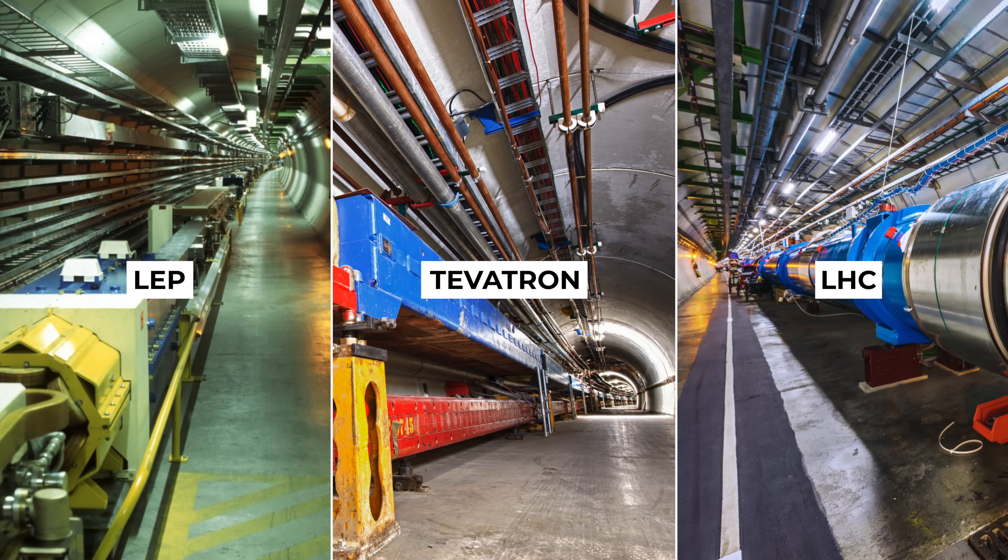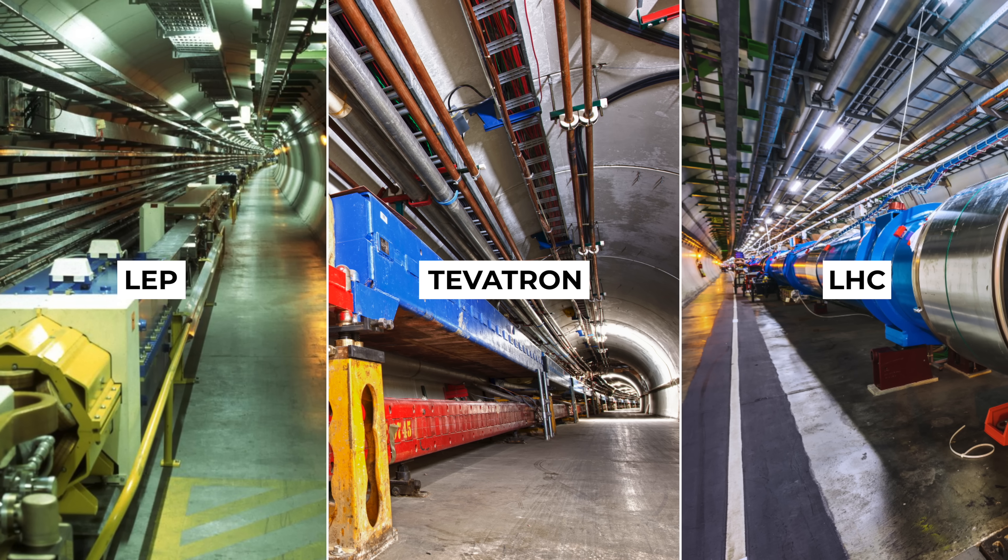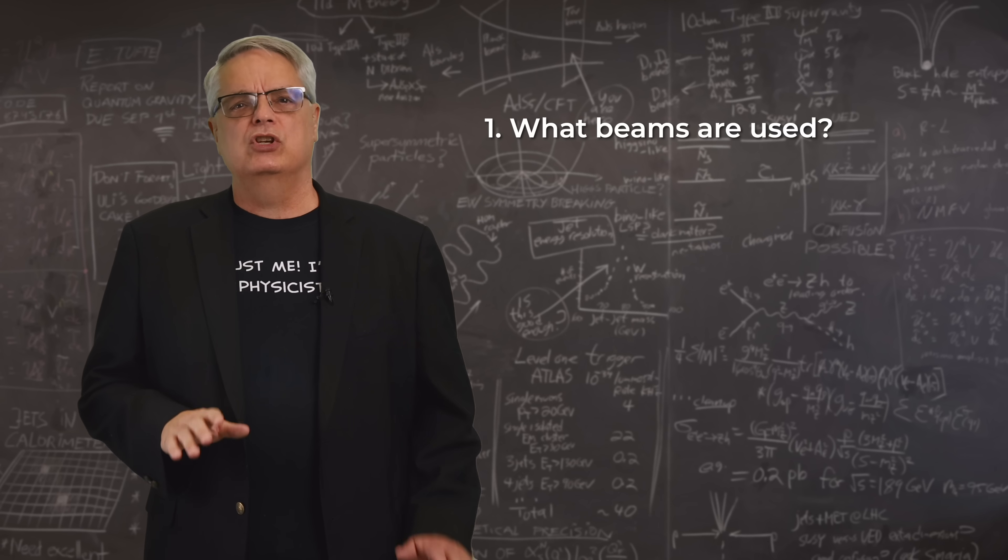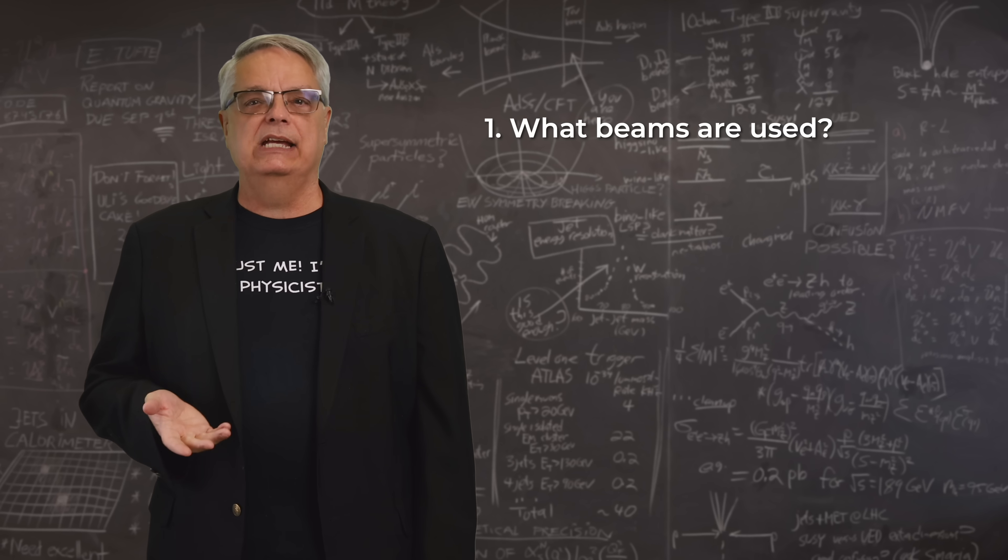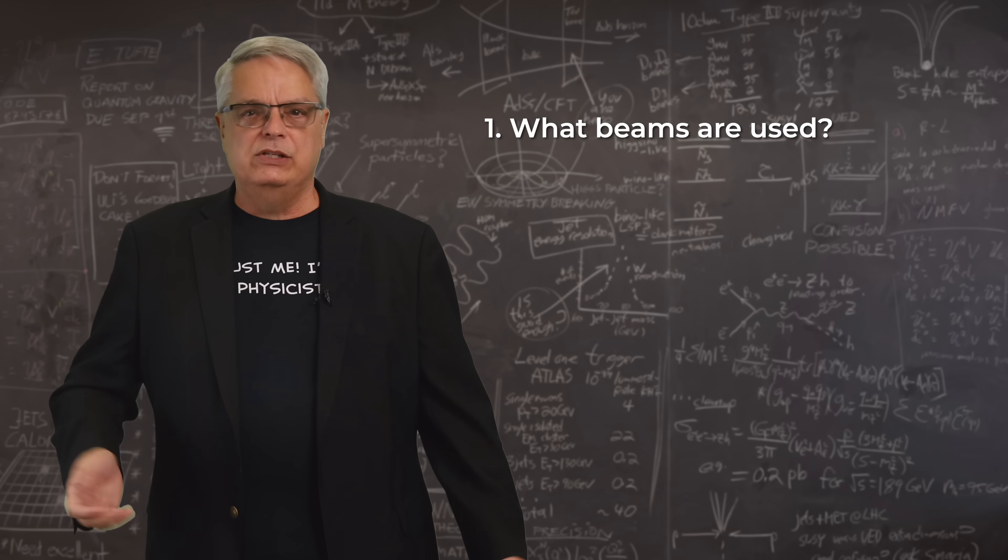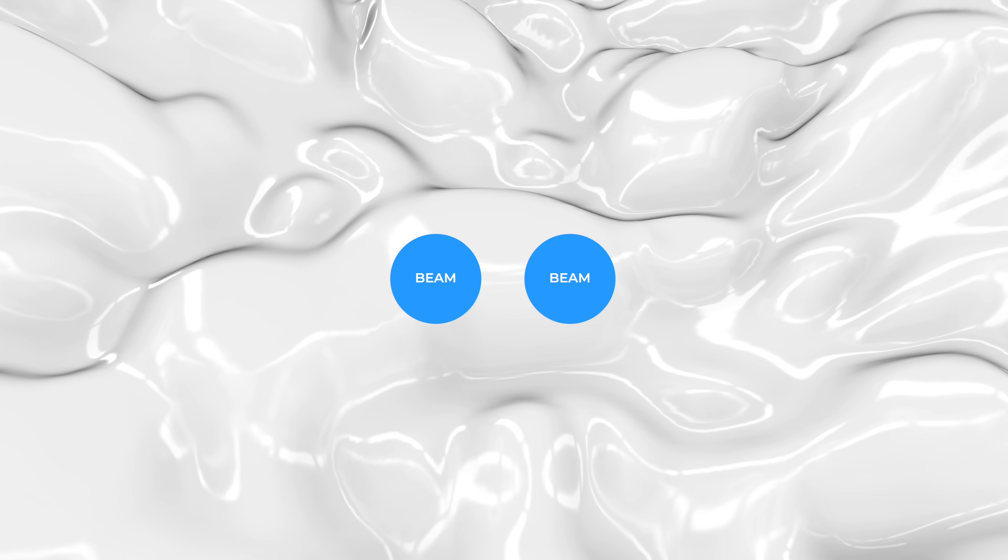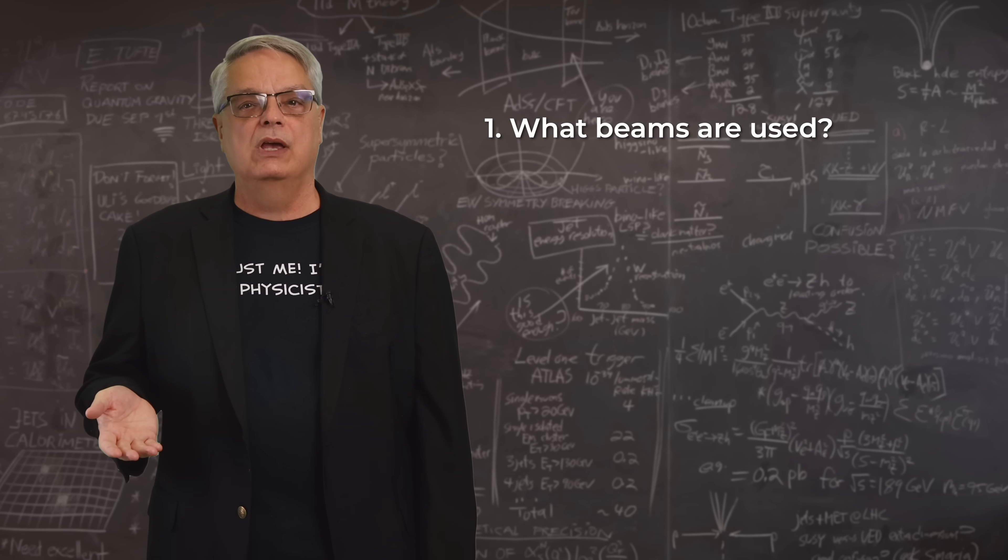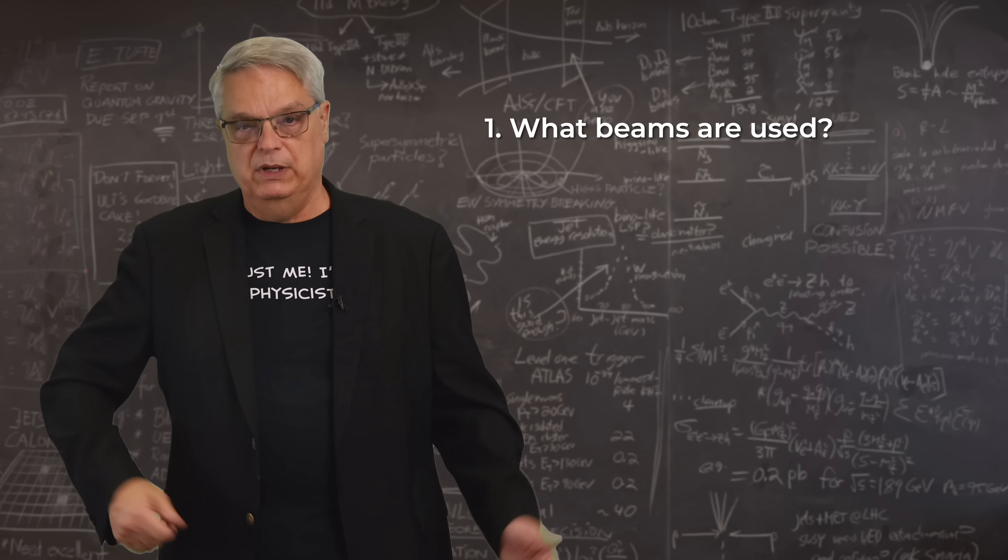Each of these three accelerators searched for the Higgs boson in different ways. That's because there are a handful of important considerations in the entire process. The first is just exactly how the accelerator will produce Higgs bosons. Since Higgs bosons don't normally exist in nature, we have to create them. This uses Einstein's equation E equals mc squared. We convert the beam energy into Higgs bosons, and since each accelerator uses different beams, the way in which we convert beam energy into matter depends on the beam type and the beam energy.